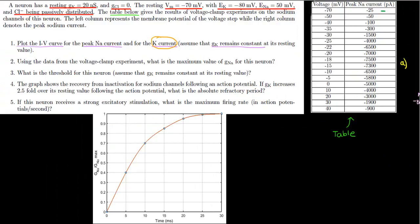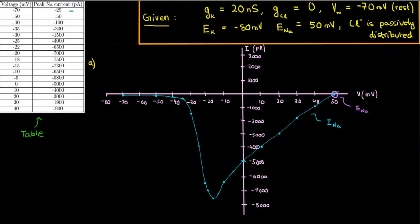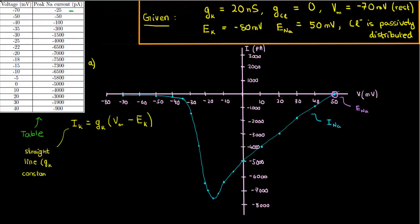The IV curve for potassium is a bit different. We aren't given any voltage-current data, but we are given the conductance, the reversal potential, and we're told that the conductance stays constant at its resting value, so it doesn't change with voltage. If we write the expression for the potassium current — which is conductance times the driving force, where the driving force is the difference between the membrane potential and the reversal potential of potassium — since conductance stays constant with voltage, the IV curve for potassium will look like a straight line, because the slope or conductance is just a constant.